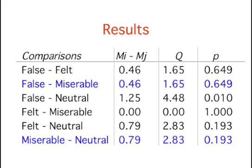You might notice that some of these results appear to be paradoxical. For example, it looks like the false smile is the same as the miserable smile, and the miserable smile is the same as the neutral smile. But the false smile is different from the neutral smile. This kind of pattern is not unusual, and it isn't contradictory when you think about what it means to fail to reject the null hypothesis. When you fail to reject the null hypothesis, it is not the same as accepting it. The finding that the false smile is not significantly different from the miserable smile does not mean that they are really the same. It just means that there is not convincing evidence that they are different.